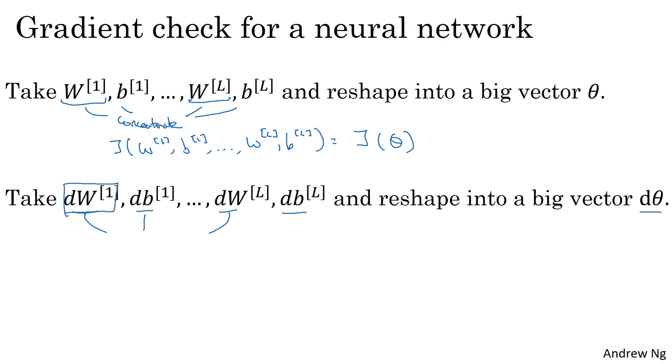Remember DW1 has the same dimension as W1, DB1 has the same dimension as B1. So with the same sort of reshaping and concatenation operation, you can then reshape all of these derivatives into a giant vector D theta, which is the same dimension as theta.